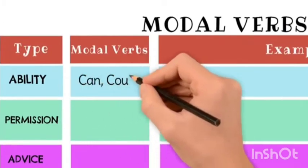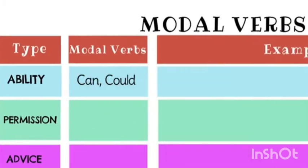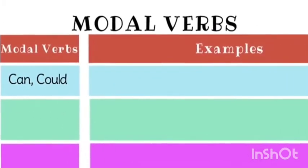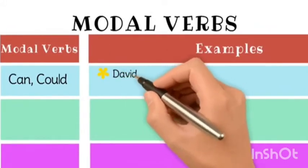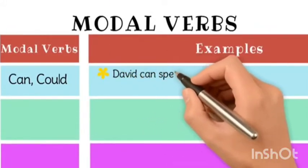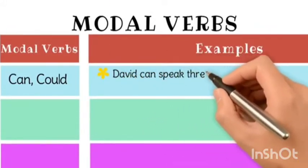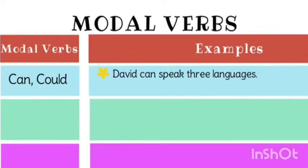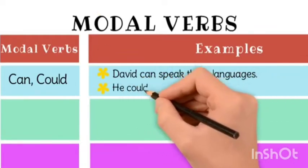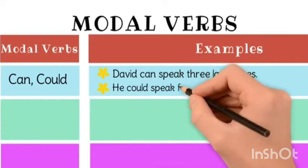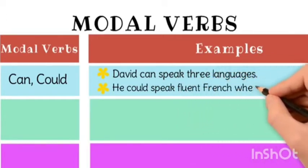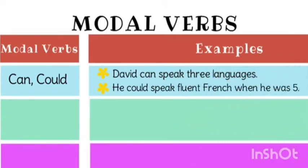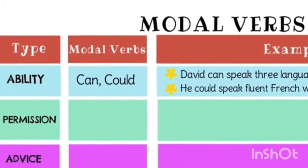For ability, we use can and could. For example, David can speak three languages. Next example: he could speak fluent French when he was five.